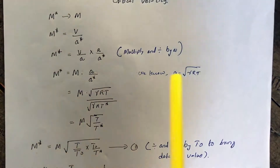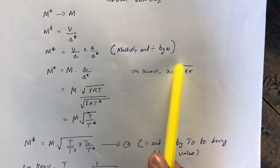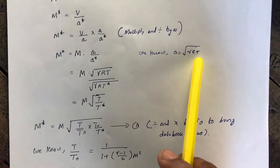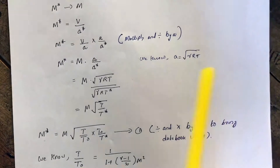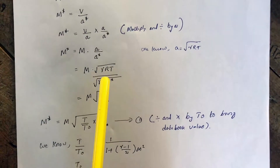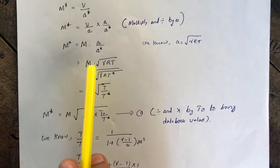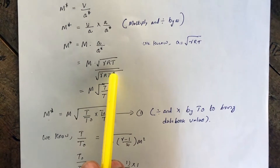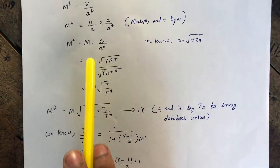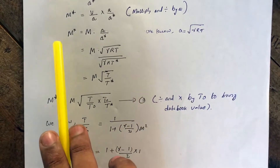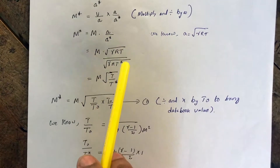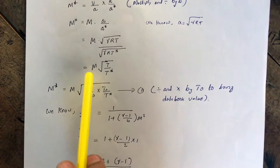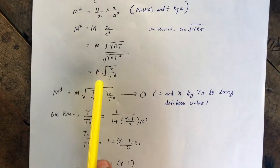We know A, the velocity of sound, is equal to the square root of γRT, where γ is the ratio of specific heats and R is the difference of the specific heats. Substituting this, A/A* becomes √(T/T*), where T* is the temperature at the critical condition. The γR terms cancel out, giving us M* = M × √(T/T*).